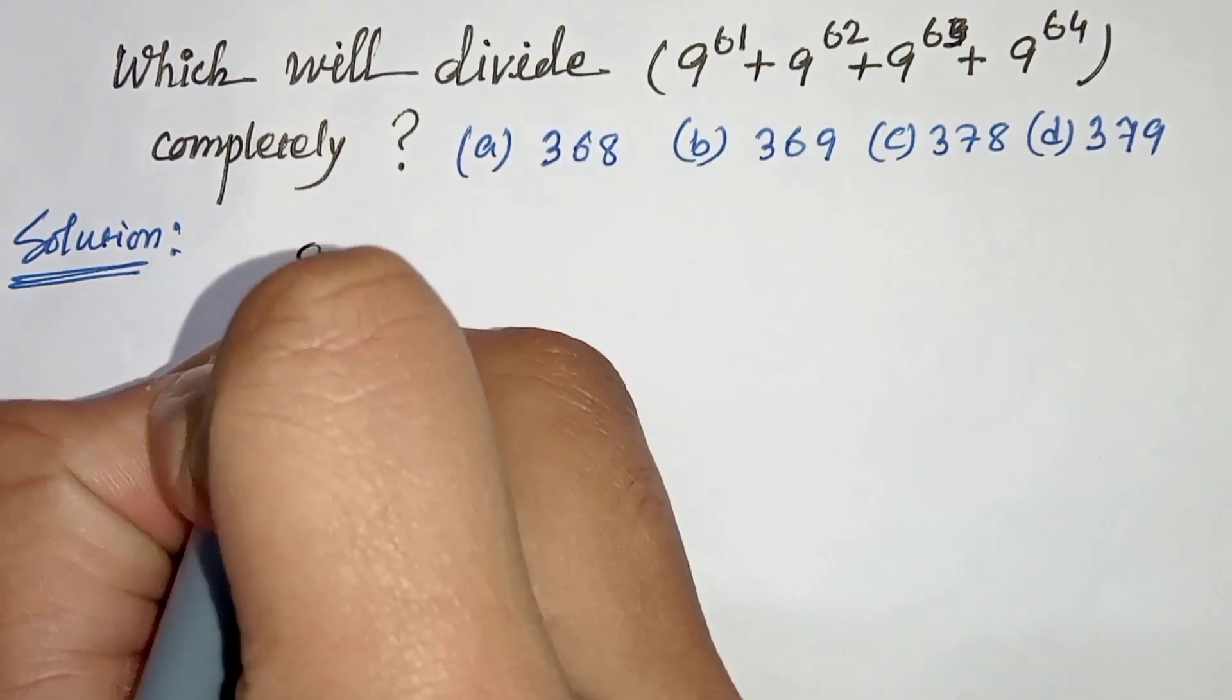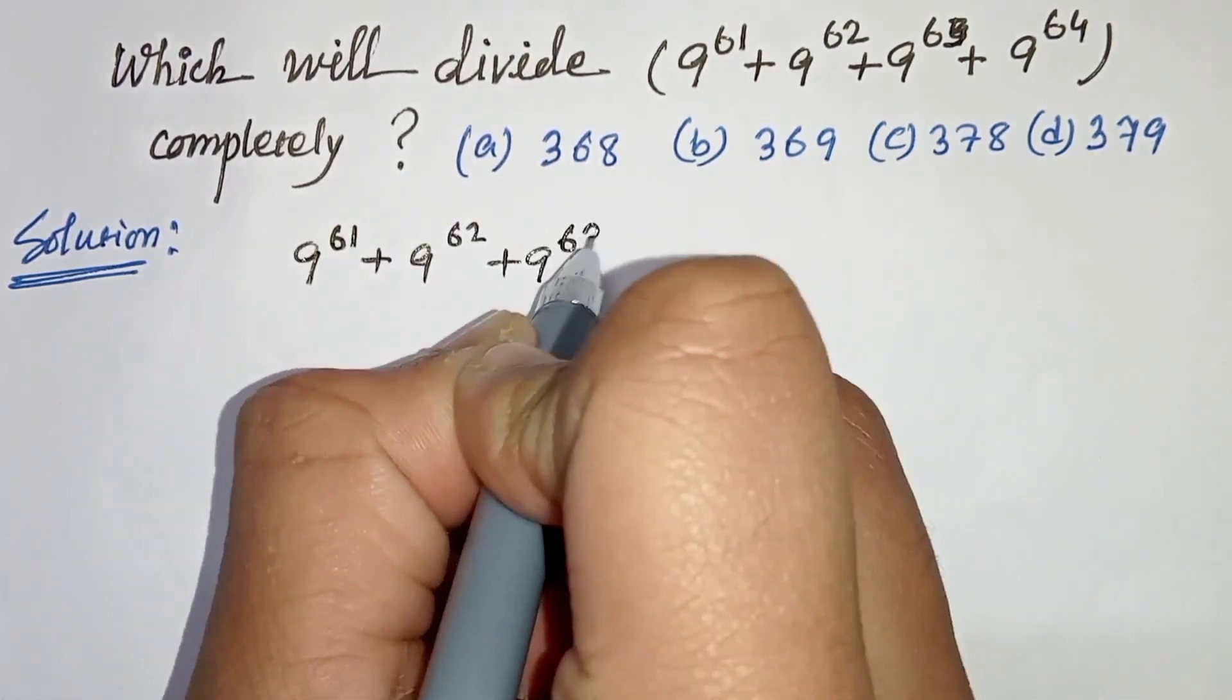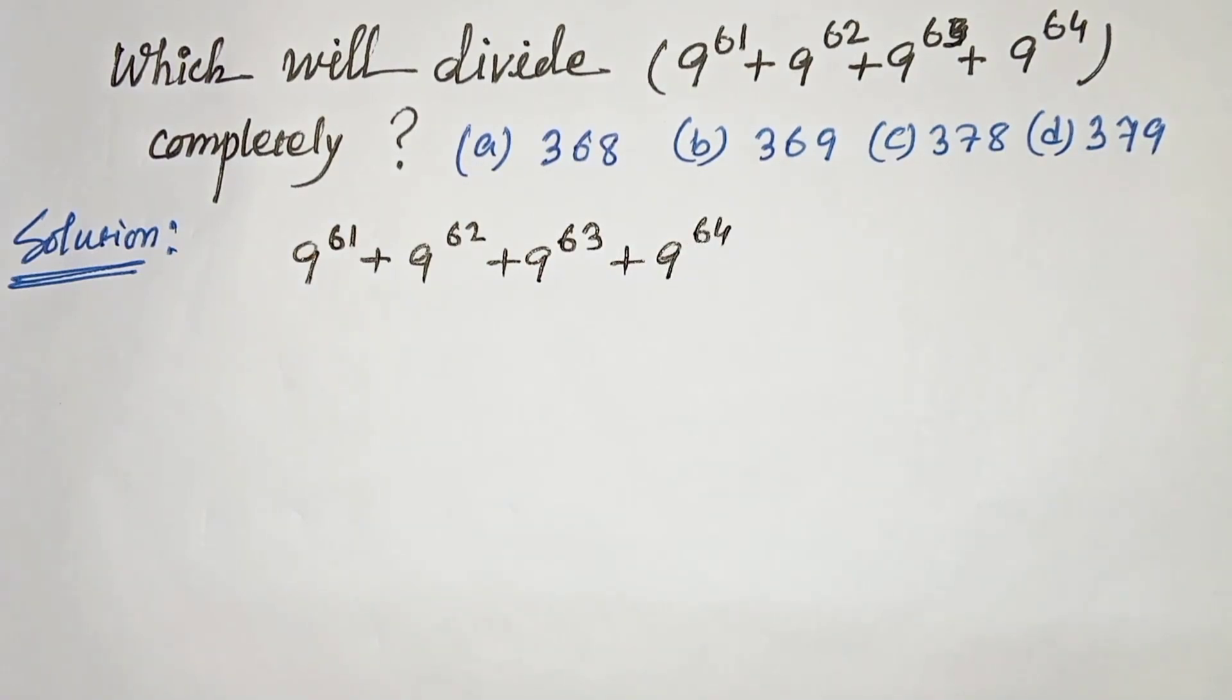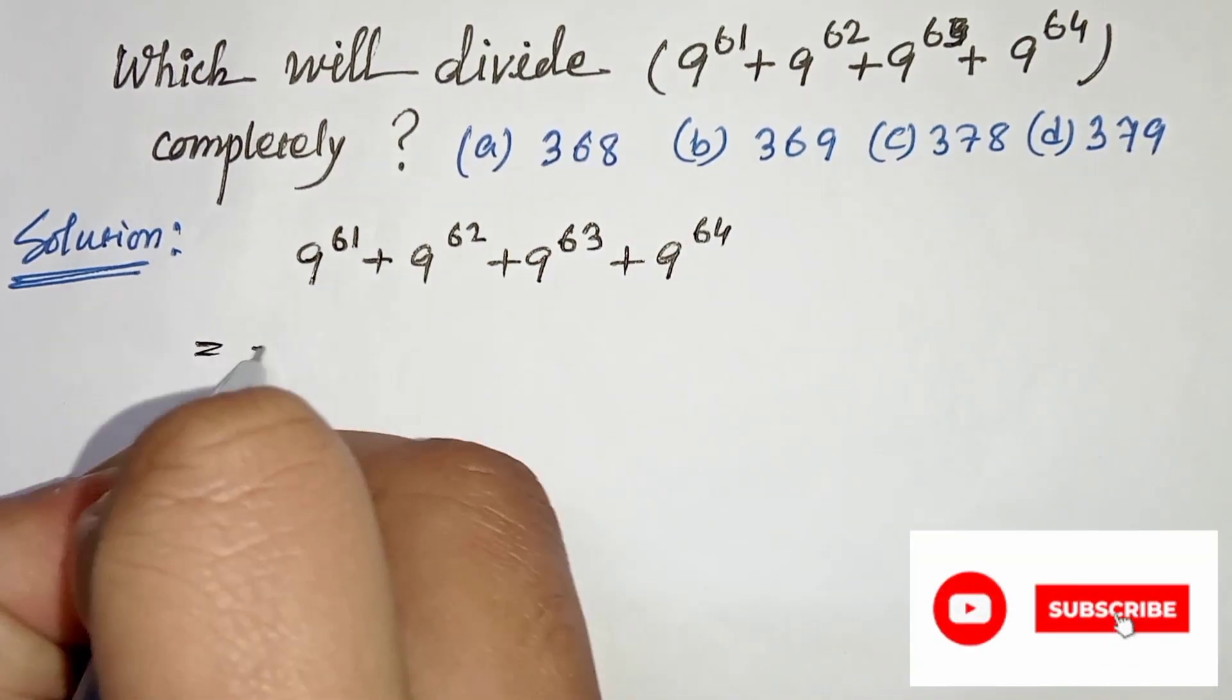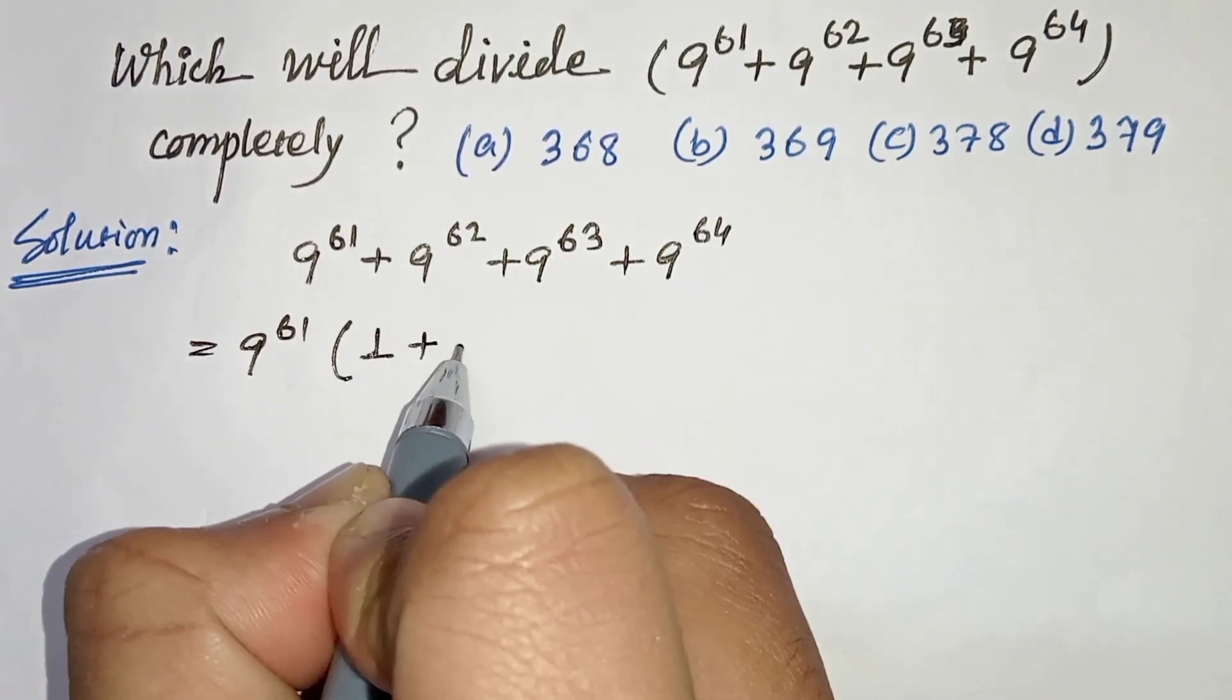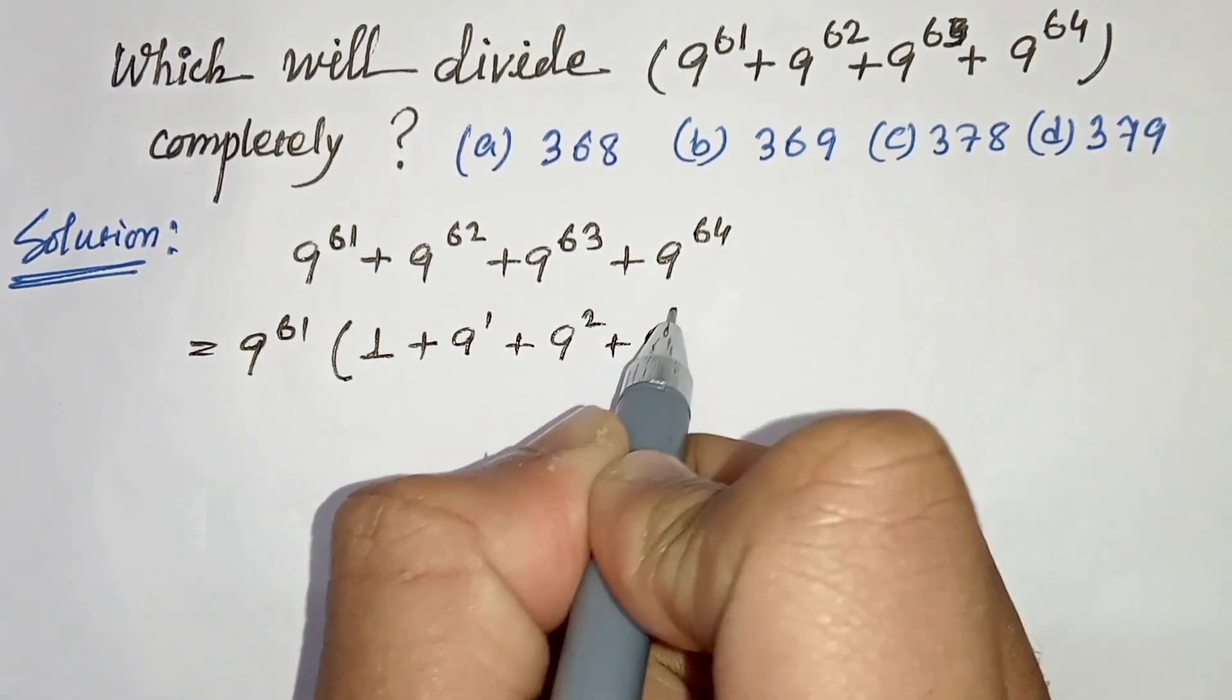We are given 9 to the power 61 plus 9 to the power 62 plus 9 to the power 63 plus 9 to the power 64. Now we will take common 9 to the power 61. Then we will be left with 1 plus 9 to the power 1 plus 9 to the power 2 plus 9 to the power 3.